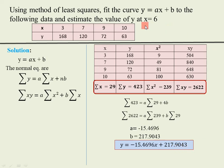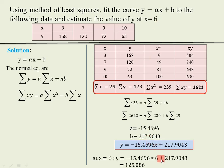The best fit curve is: y is equal to minus 15.4696 times x plus 217.9043. Now we also need to obtain the value of y at x is equal to 6. Substituting x equals 6 into this equation, we get y equal to 125.80.